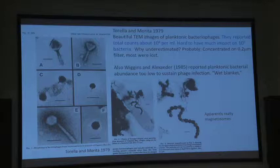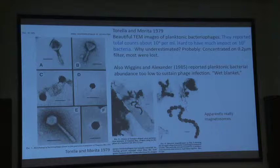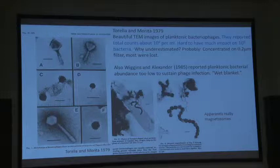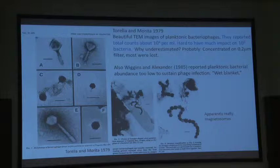Torella and Merida published a paper in 1979 where they counted viruses in seawater and reported counts of only about 10 to the fourth per milliliter. It's hard to have an impact when bacteria were 10 to the sixth per milliliter. Why did they have such low counts? They concentrated their viruses on 0.2-micrometer filters — the large majority of viruses passed through them and they just way underestimated the counts. Also, one of the figures in their paper showed what they called a chain of hexagonal virus particles — I think those are magnetosomes in that picture.